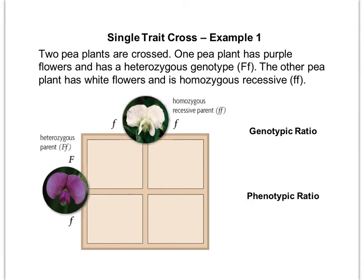We're going to start by looking at what we call a single trait cross, or just a 2x2 Punnett square. We're going to keep on going with Mendel's pea plants and look at flower color. One pea plant has purple flowers and has a heterozygous genotype, which means capital F, lowercase f, or one dominant and one recessive allele.